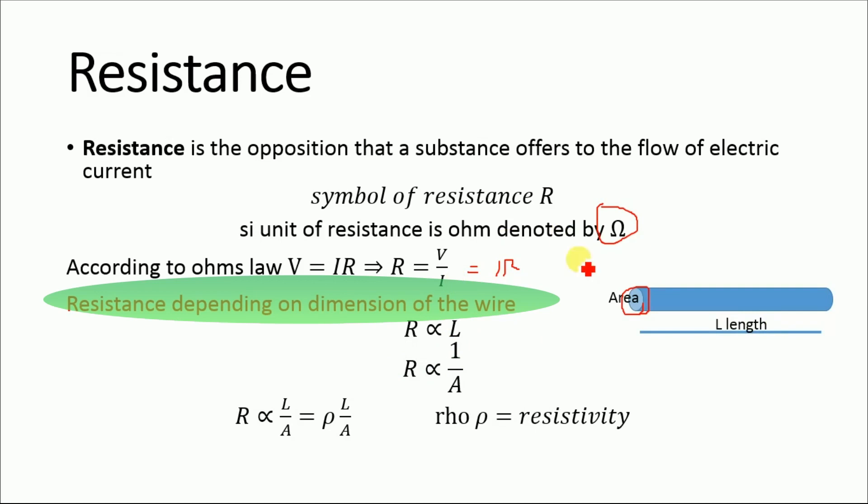This resistance is inversely proportional to the area. Combining these two relationships, we get resistance R equals ρ times L divided by A, where ρ (rho) is known as resistivity—the constant of proportionality.